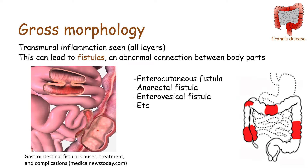This can actually happen between any part of the body that comes in contact with the GI tract. We can have an enterocutaneous fistula — a connection between the bowel and the skin, creating an opening to the outside environment which can be very dangerous. There can be an anorectal fistula, which tends to be quite common. An enterovesical fistula is a connection between the bowel and the bladder, which can result in a patient essentially passing feces in their urine.